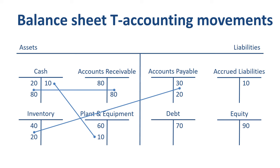The fourth transaction is a reclass between accrued liabilities and accounts payable on the liability side of the balance sheet. We had a significant amount of outside services performed just before year-end last year, for which we had not received invoices yet. At that point, we recorded the cost in the income statement as a debit, and the liability on the balance sheet as a credit in accrued liabilities. Now that we received the invoice from the supplier, we book a credit to accounts payable, further increasing our balance of money that we owe to suppliers, and we book a debit to accrued liabilities.